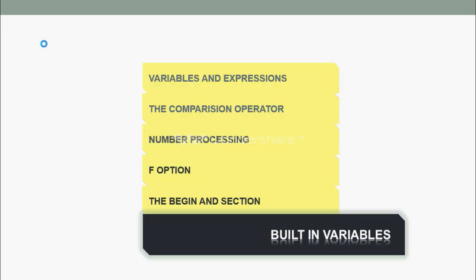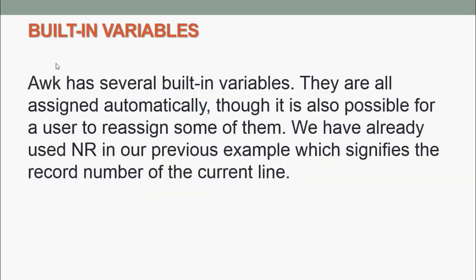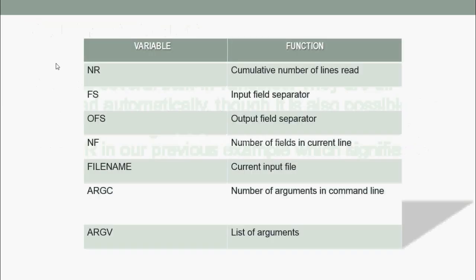Next, we are going to see built-in variables. AWK has several built-in variables. They are all assigned automatically, though it is also possible for a user to reassign some of them. We have already used NR in our previous example, which signifies the record number of the current line. These are some of the variables and their functions: NR - cumulative number of lines read; FS - input field separator.